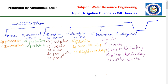Classification based on discharge is subdivided into five types: main canal, branch canal, major distributory, minor distributory, and water course. The main canal carries water directly from a river or reservoir, creates a heavy supply, and is not used for direct irrigation. It acts as a water carrier to feed supplies to branch canals and major distributories.